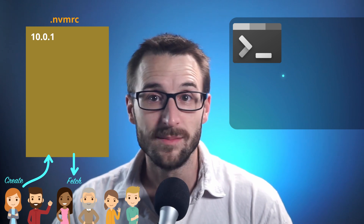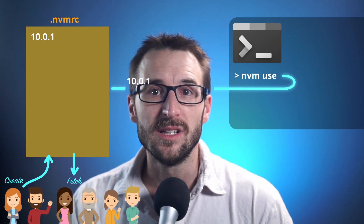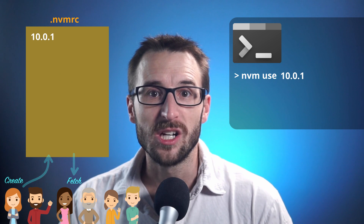Like the package.json, which is used to share configuration across developers, you can share the NVM configuration by creating a .nvmrc file. The file is a one-liner that contains the version number. In our example, the file would contain the string 10.0.1. That's it — nothing more. Then typing nvm use would read the version from the file and automatically activate it for your project.